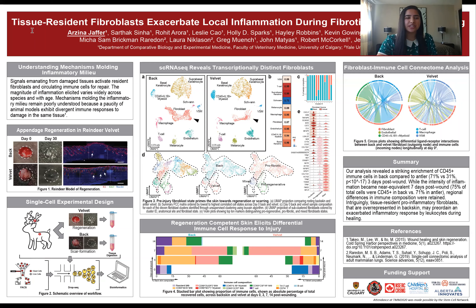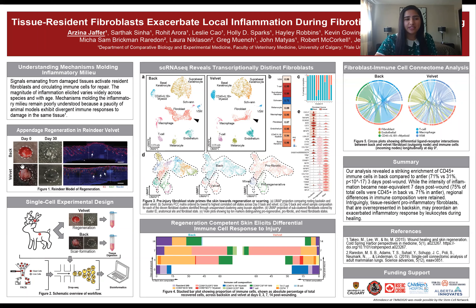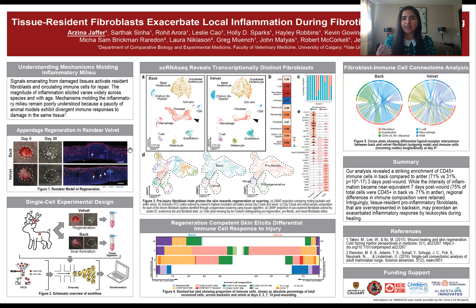However, recent work in the Bernaski lab has identified the reindeer as a very powerful model of regeneration, because if you create an injury on the back skin of the reindeer it forms a scar, but if you create an injury on the velvet skin of the reindeer, which is the skin on the antlers, it regenerates. So we surmise that these differences in wound healing outcomes are because of the presence of fibroblasts and their interactions with endothelial and immune cells.